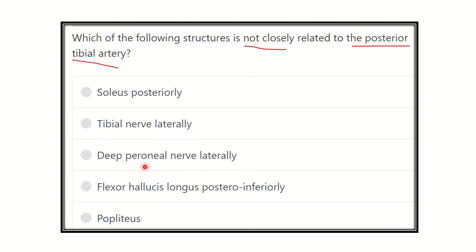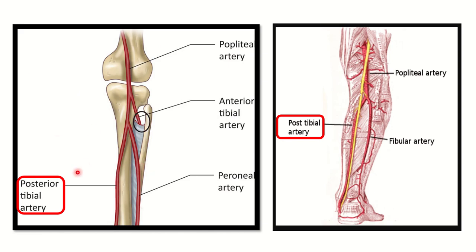Let's look at the posterior tibial artery in the picture. We can see the lower part of the femur, tibia, and fibula. The popliteal artery divides into two parts — the anterior tibial artery and the tibio-peroneal trunk. The tibio-peroneal trunk then divides into the posterior tibial artery and the peroneal artery.